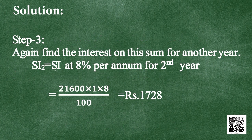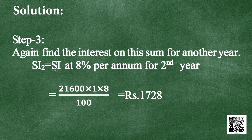Step 3: Find the interest on this sum for another year. SI2, simple interest at 8% per annum for the second year: the principal is now rupees 21,600, time is 1 year, rate is 8%, divided by 100. That equals rupees 1,728.